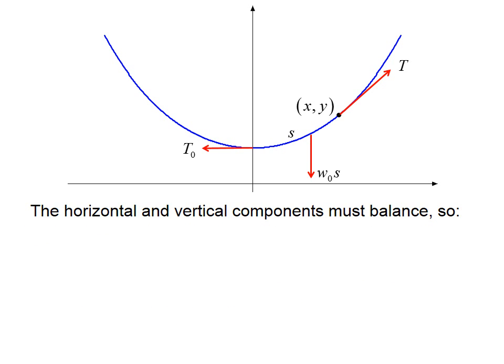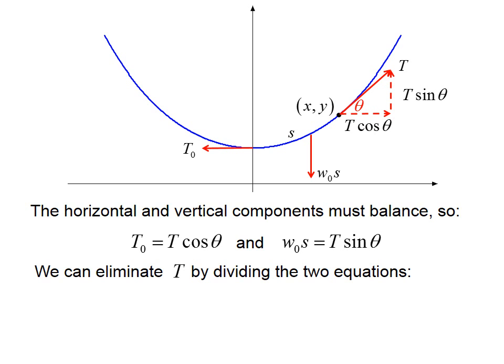The horizontal and vertical components must balance. So t sub o equals t times cosine theta, that is the horizontal component. And w sub o s equals t times sine theta, that is the vertical component. We can eliminate t by dividing the two equations. So tangent theta equals w sub o s over t sub o.